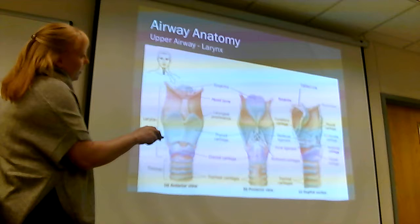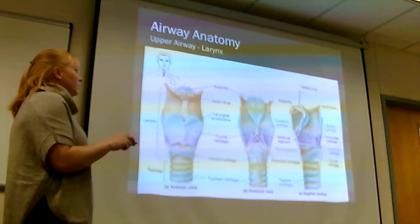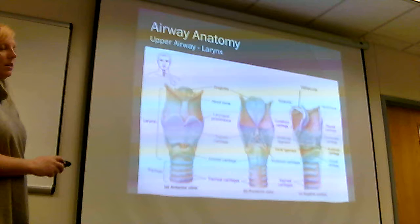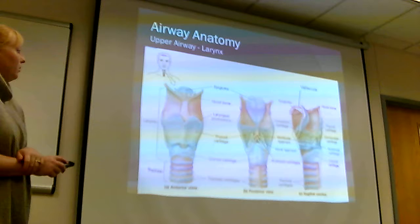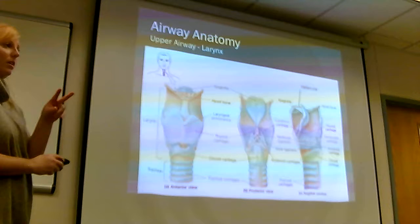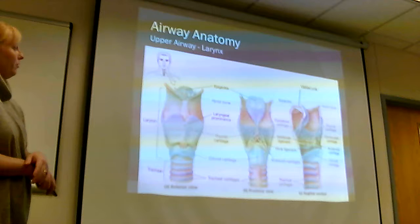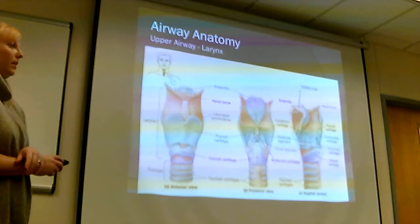Other important structures are the cuneiform, corniculate, and arytenoid cartilages — collectively called the posterior cartilages or arytenoid cartilages. Right above these cartilages are the vocal cords — your target for the tube. These are landmarks you look for when intubating. The arytenoids are sites of muscle attachment that cause phonation and can be damaged with a rough intubation; disarticulation can cause the vocal cords to slam shut and the patient cannot breathe.